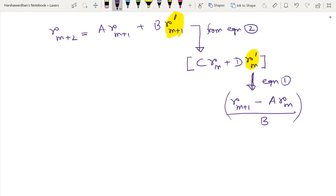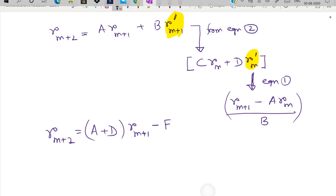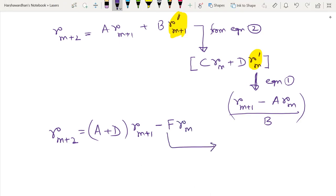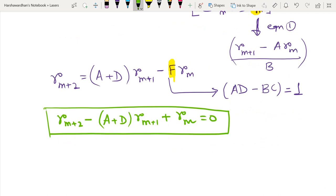So in the end, I essentially obtain the following equation that my Rm+2 equals A plus D, you can clearly see A plus D would contain the Rm element, A plus D Rm+1 and then minus, so you have F times, I am just writing it as F, I tell you what that times Rm, which is the second term, and you will see that I can easily identify my F as A times D minus B times C. So my F is clearly, which by the way is clearly equal to 1. So here is our final equation.